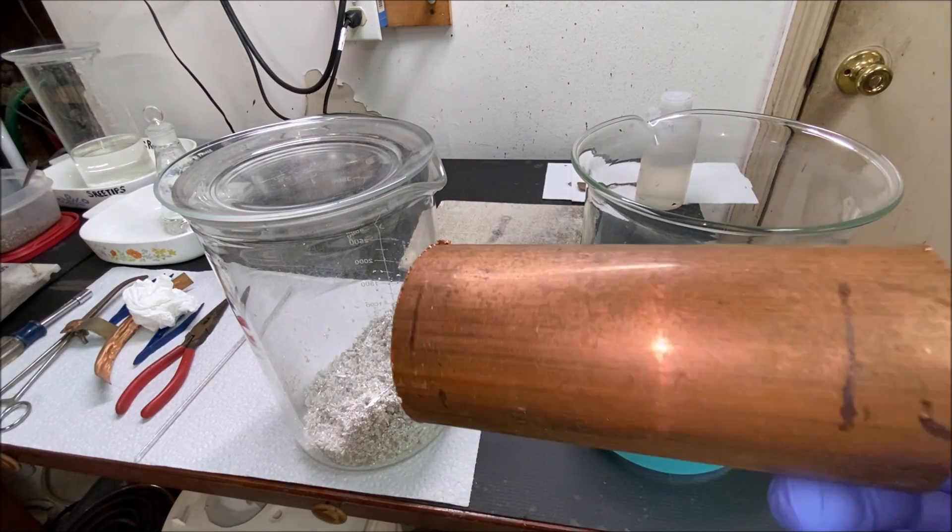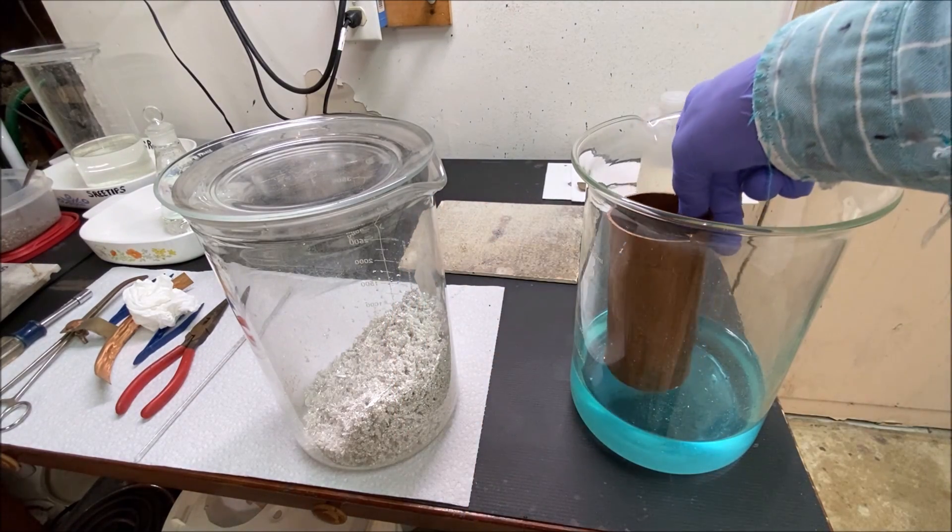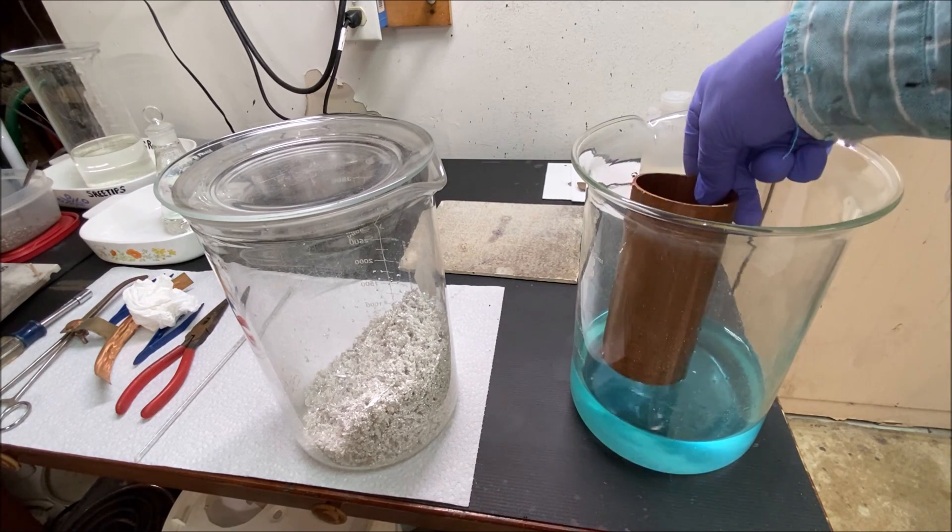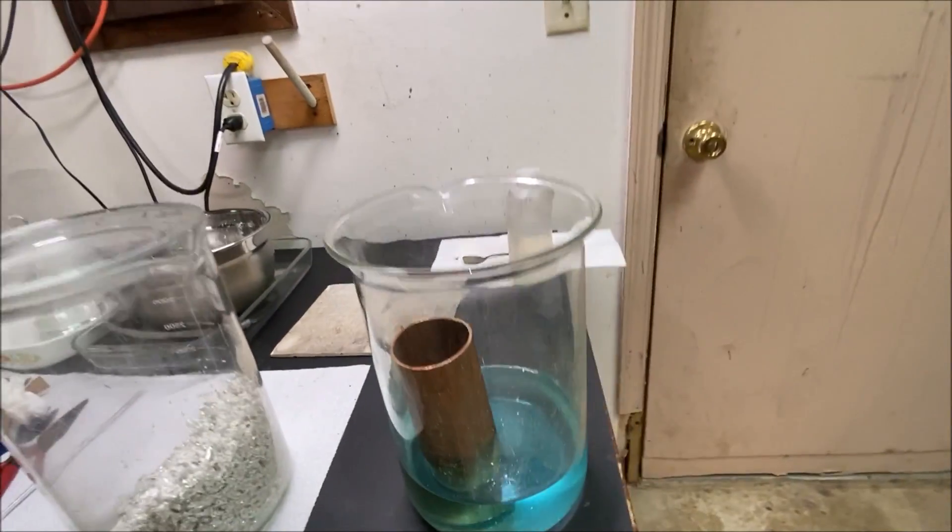I've got a piece of copper here. Put that into the beaker with our silver solution in it and you'll see that the silver should start coming out of solution on it almost immediately.